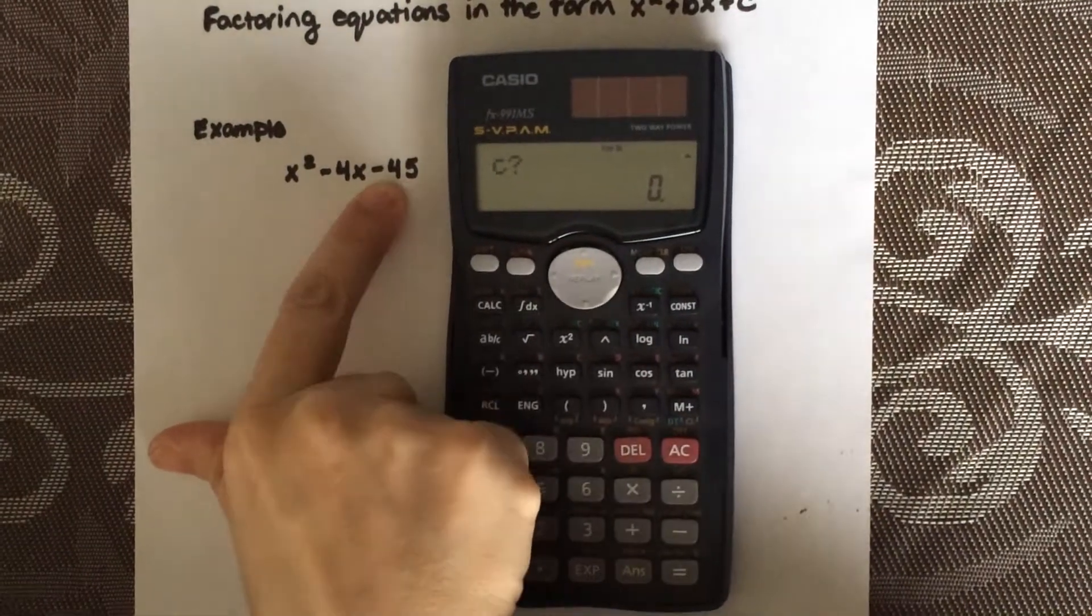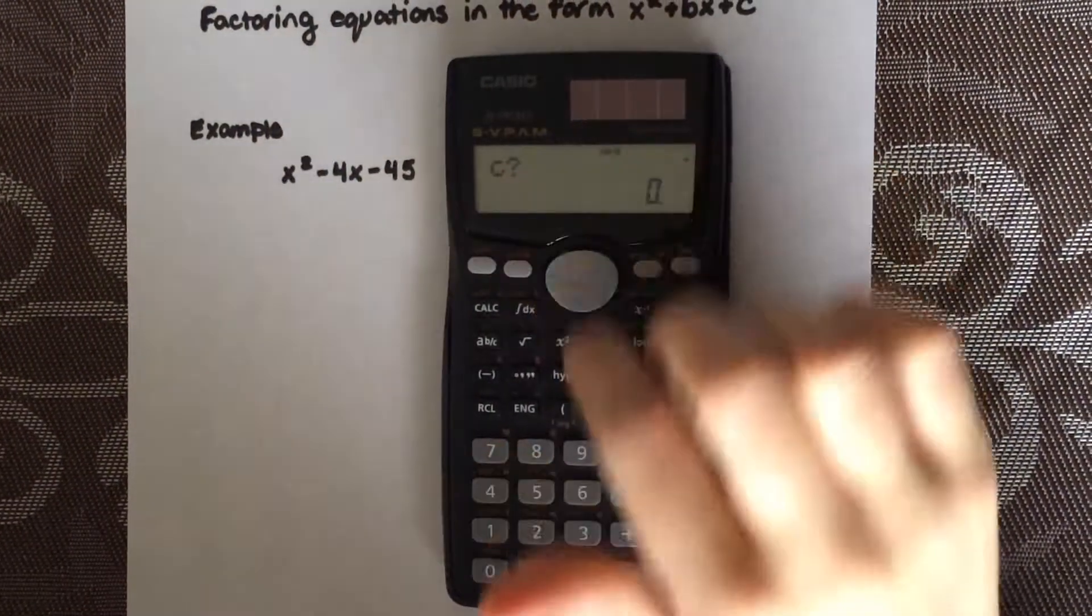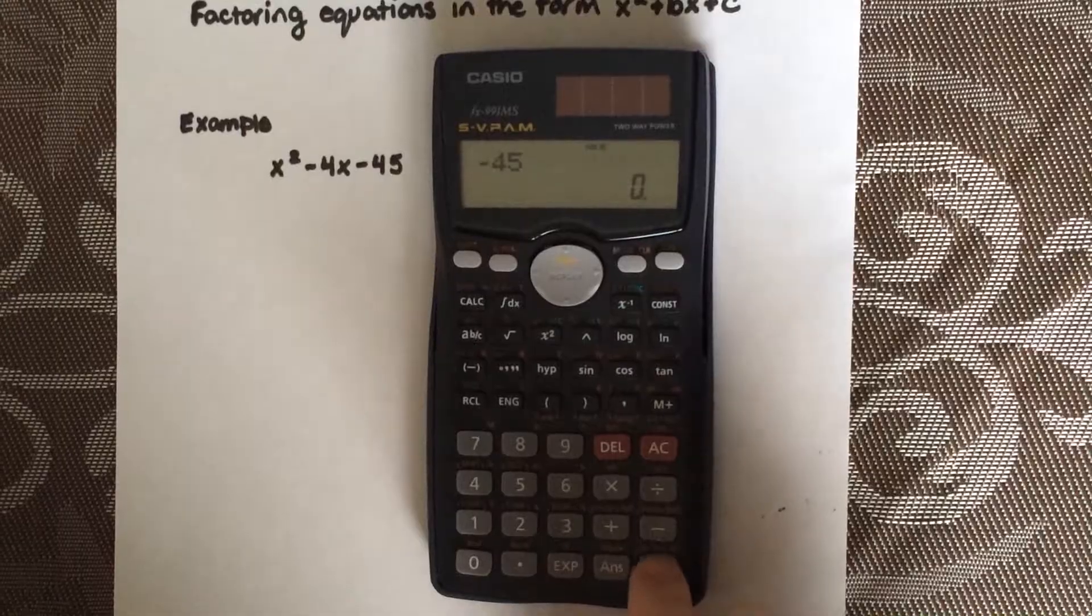And for c, the last value without a variable beside it, is negative 45. Select negative 45. Hit enter.